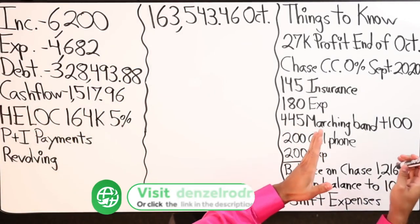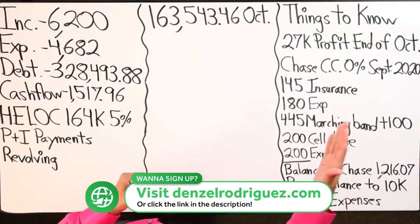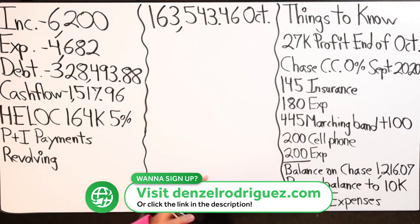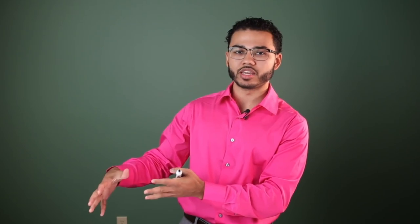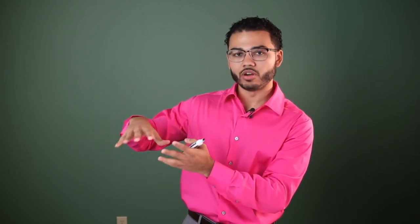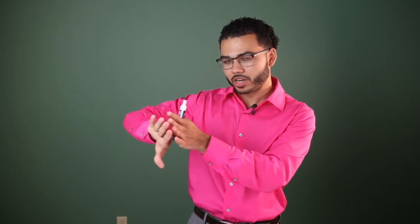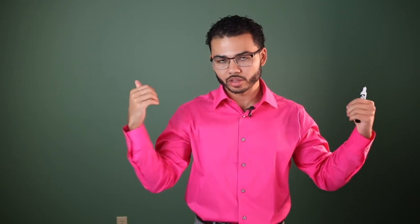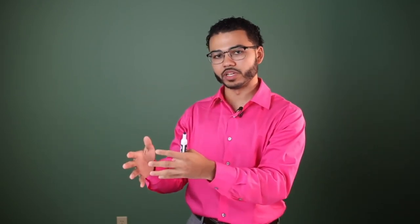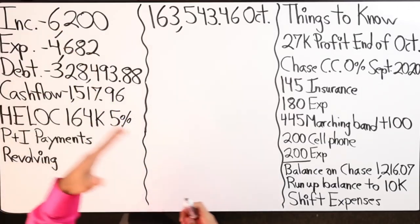His current income is $6,200 — this is his personal income. He does real estate investing, so real estate income goes into a business checking account. I didn't include that because I separate the business and personal sides. Unless all money flows to one account, I keep them separate.